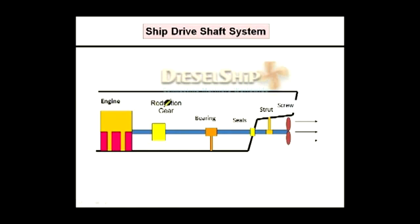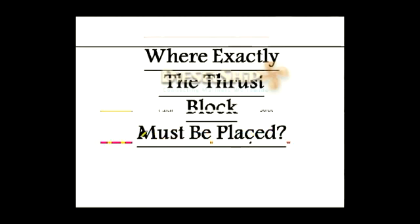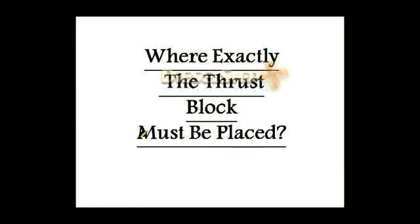This is the pictorial representation of the entire shafting system of a ship. Here is the propeller connected to the propeller shaft entering the ship through the stern tube seals, connected to the intermediate shaft. The intermediate shaft is mounted on the intermediate shaft bearing, and through the reduction gear it is connected to the flywheel of the main engine and to the crankshaft. The thrust block must be located after the crankshaft, but it can be located anywhere along the shafting system. Now let's see what decides where exactly the thrust block must be located on the entire shafting system.